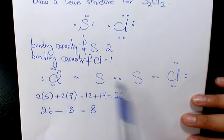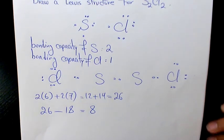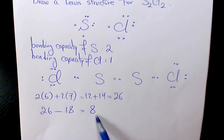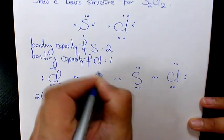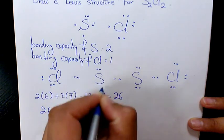So we need to put these eight electrons: one, two, three, four, five, six, seven, eight. Now it has a full octet.